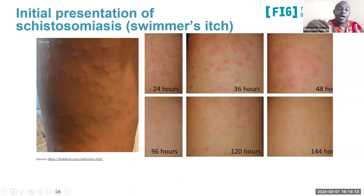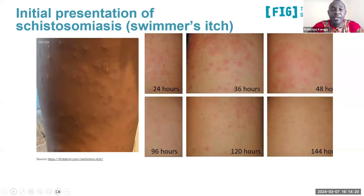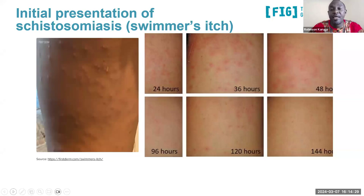The worm then takes on a new lifestyle — it travels through the blood and matures in the liver before migrating either to the intestines or the blood capillaries around the intestines or the capillaries around the urinary bladder.